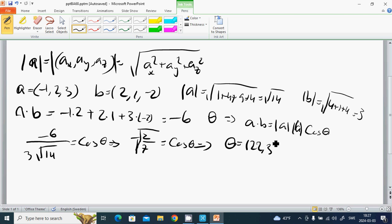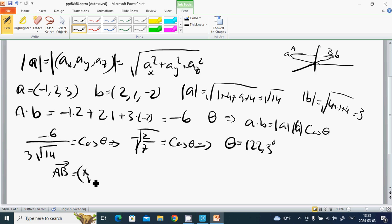And then we have pictures in space. Point A is there, point B is there. Then we have vector AB, which equals (xb - xa, yb - ya, zb - za).